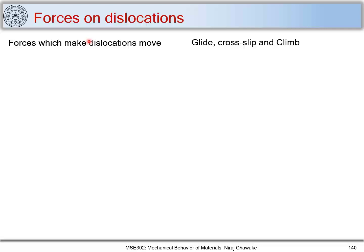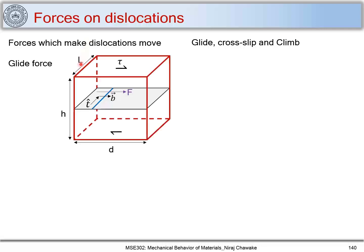We will take a very simple example of an edge dislocation. Let's consider a crystal where this is a slip plane, and this is a dislocation line having a tangent vector T and a Burgers vector B which is perpendicular to this tangent vector, making this an edge dislocation. The dimensions of this crystal are D, H is height, and L is length. Let's apply a shear stress tau and see this dislocation move on the slip plane. Let's call this force a glide force.